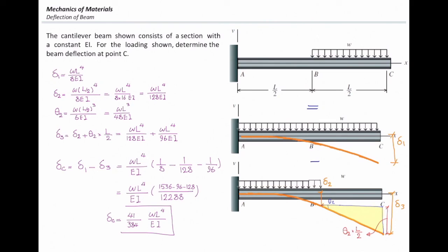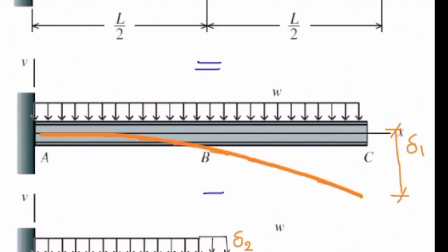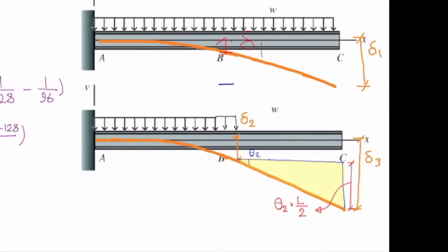What would be the case if the problem asks for deflection at B? For that, I don't need to calculate theta. I don't need to calculate this triangle here. So delta 1 can be defined like this. And delta 2 would be defined like that. And the overall deflection would be delta 1 minus delta 2.